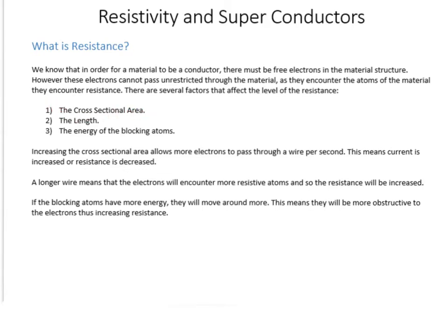So one factor is the cross-sectional area. Another one is the length, and the other one is the energy of the blocking atoms. So if you increase the cross-sectional area of your wire, for instance, essentially you've opened up a large amount more space. So more electrons can pass through that wire per second because you've created more space for them to move through. And essentially doubling the cross-sectional area will double the current or halve the resistance. A longer wire means that an electron trying to go through the wire encounters twice as many resistive atoms. So if it's double the length, there's twice as many atoms. So double length means double the resistance. There's a linear relationship there between resistance and length, whereas before it was a linear relationship between current and the cross-sectional area.